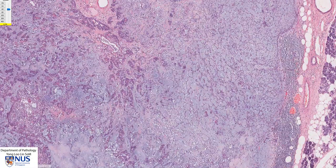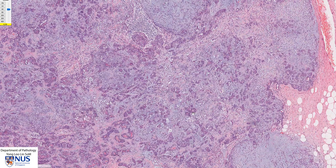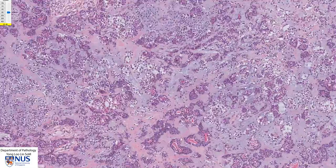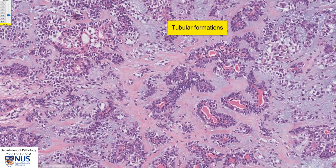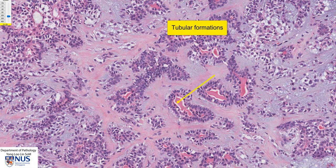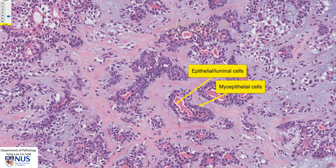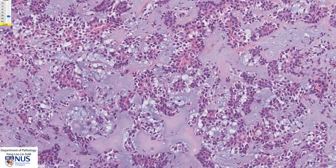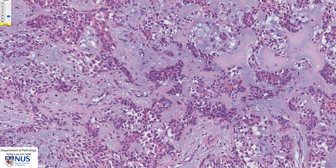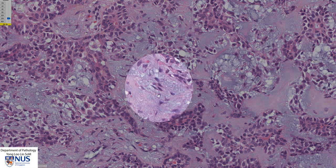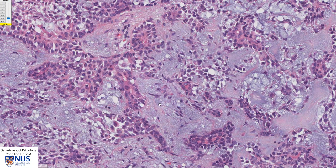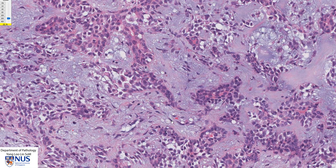In addition to this chondromyxoid stroma, there are many cells that form a variety of structures. In this area, we can see tubule formation. The tubules appear to be lined by an inner layer of epithelial cells, surrounded by an outer layer of myoepithelial cells — so we can see some bilayered tubular structures here. In other areas, the cells seem to just melt into the stroma, and these cells are also derived from myoepithelial cells. Their shape is a little different in the myxoid stroma — they tend to have tapering cytoplasmic processes and are sometimes very spindle-shaped with slender, elongated nuclei.